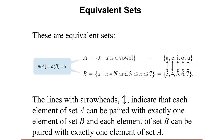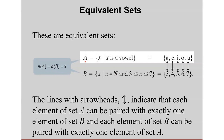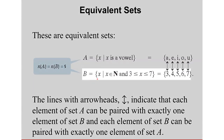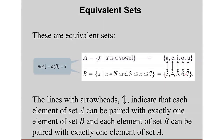To illustrate, these two sets are equivalent. Set A is the set of all vowels: {A, E, I, O, U}, and set B is the set of all natural numbers X such that 3 ≤ X ≤ 7, which gives {3, 4, 5, 6, 7}. Both sets have the same cardinality, which is equal to 5.